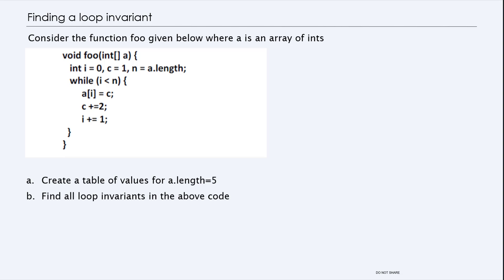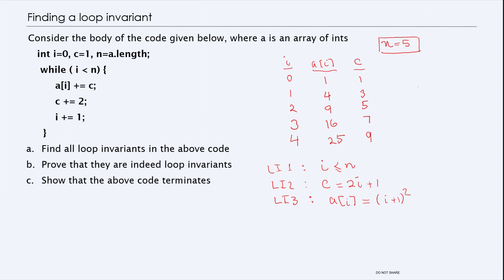I'm going to start with a simple idea — try to find a proof with loop invariants. In order to find loop invariants, you have to start tracking the values of the things that change. Here, the value of ai changes, c changes, and i changes. The first thing we're going to do is create a table with i, ai, and c. Initially, i is zero, we don't have a value for ai yet, but c is equal to one.